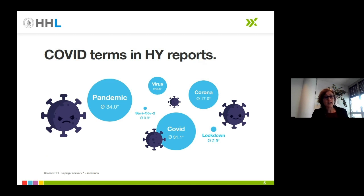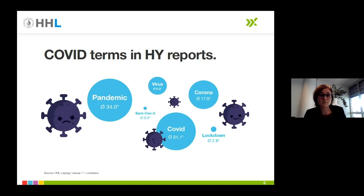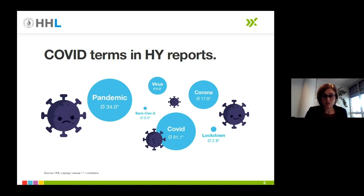Prior to the webinar, we conducted a study on the half-year reports of German DAX companies, and COVID's omnipresence was already clearly visible. On the slide, you can see the average number of times certain words relating to COVID-19 are mentioned — pandemic 34 times on average, COVID 31.1 times, or Corona 17 times. If you consider the length of a half-year report, this means a mention was made twice on every page, pretty much.